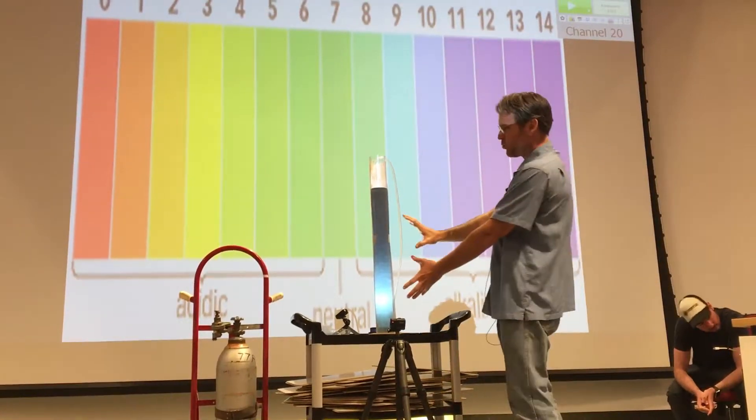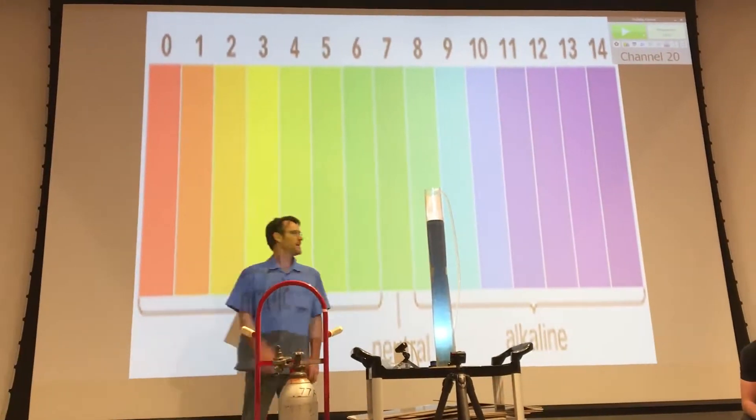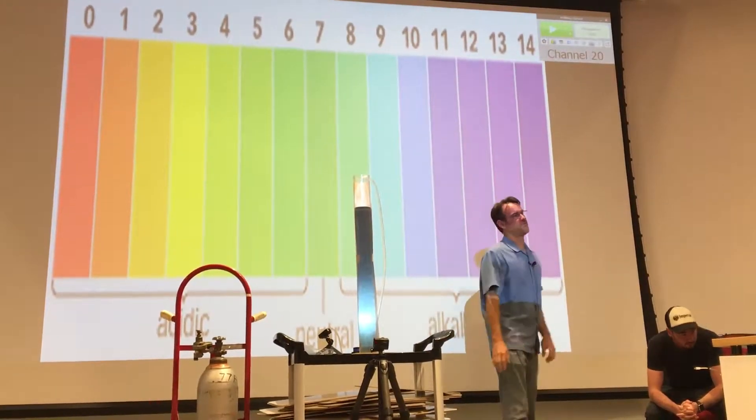So if we could make this water acidic all the way down to zero, it would turn bright red. And if we could make it extremely basic, it would turn purple all the way up to 14.